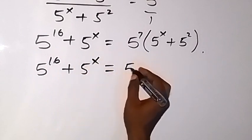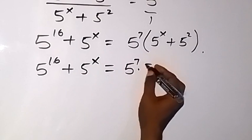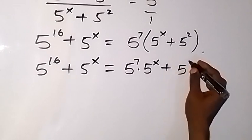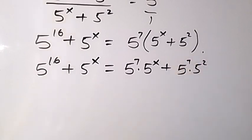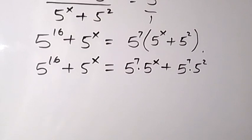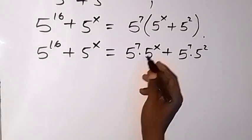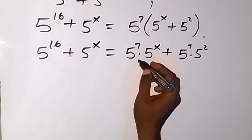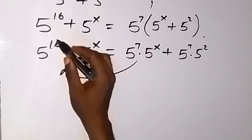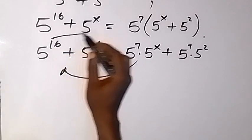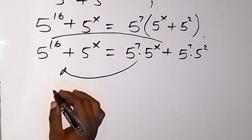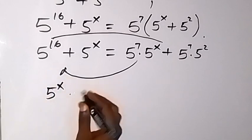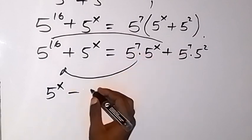Expanding the right side gives us 5 raised to power 7 times 5 raised to power x, plus 5 raised to power 7 times 5 raised to power 2. We then take the terms with power x to one side, so 5 raised to power x comes to this side.